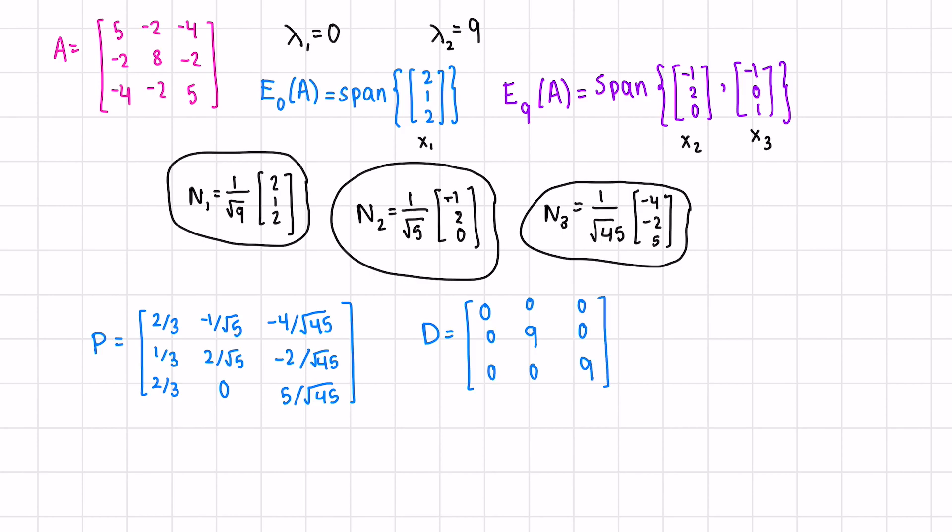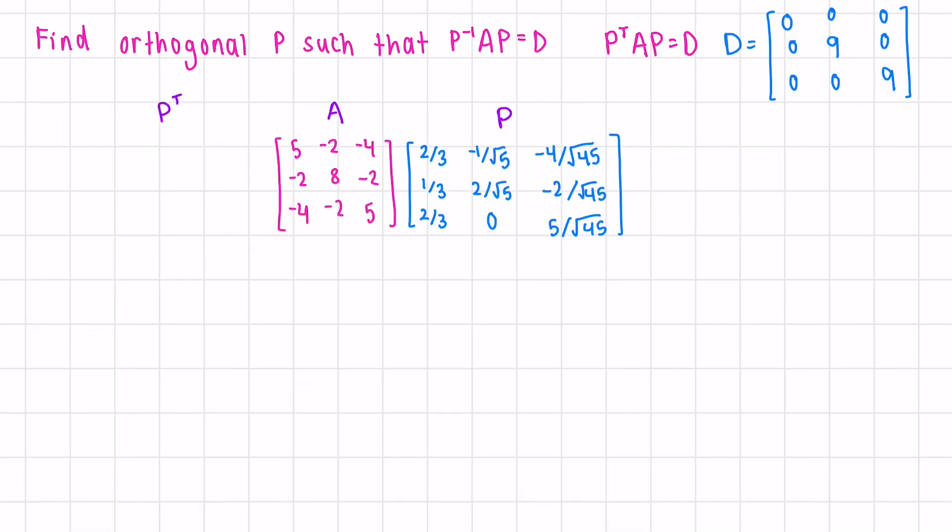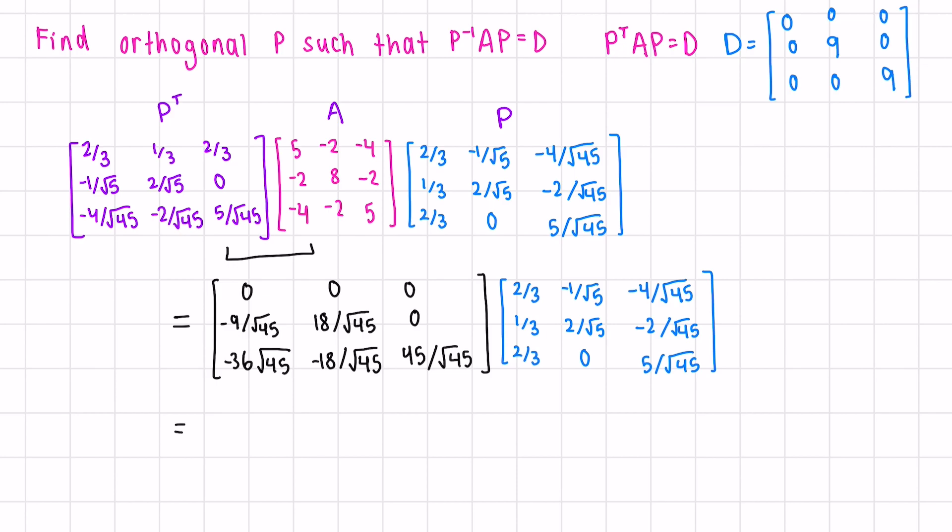And to check that our answer is correct, we should have, since P is orthogonal, P transposed AP is equal to this diagonal matrix. If we transpose P, we switch the rows and the columns. Next, we can multiply the first two matrices together. And if you do this multiplication, we end up with 0, 0, 0, 0, 9, 0, and 0, 0, 9, which is just what we wanted.